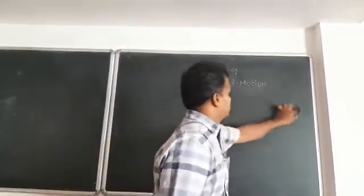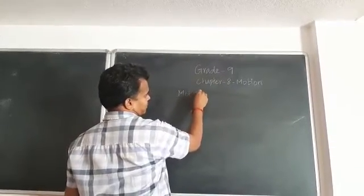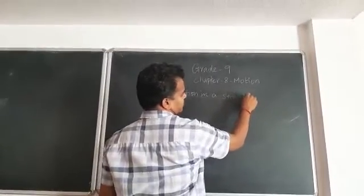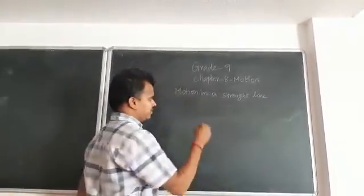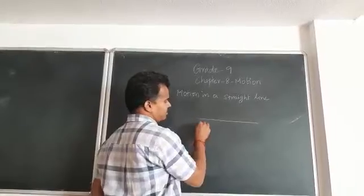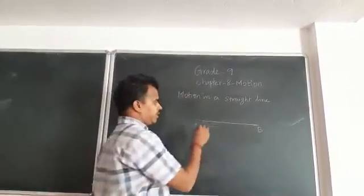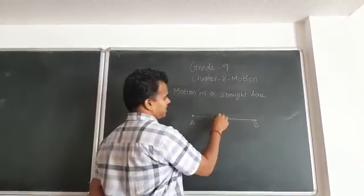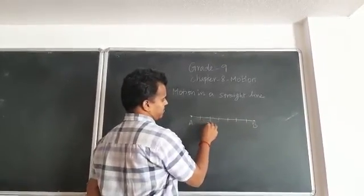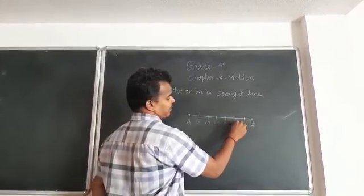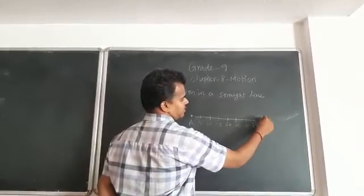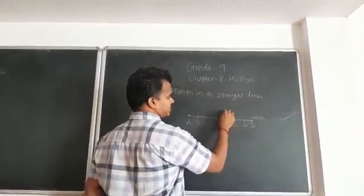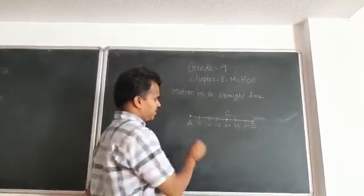Right now we are going to study motion along a straight line. Using my textbook as an example, I have a straight line. One end is named A and the other end is named B. Each point is marked at 5, 10, 15, 20, 25, 30, and 35 meters. I also marked a point C along this line.